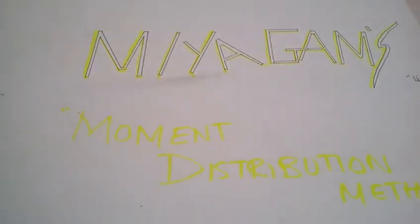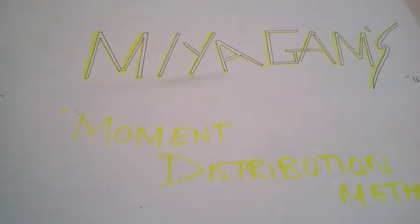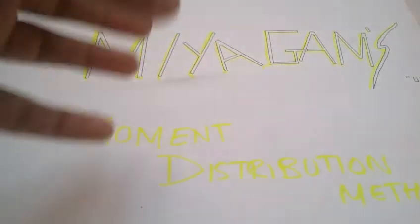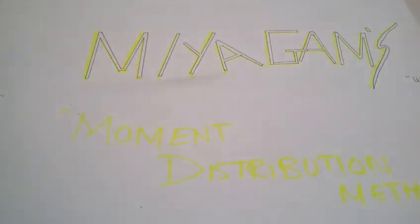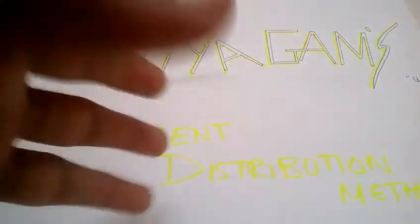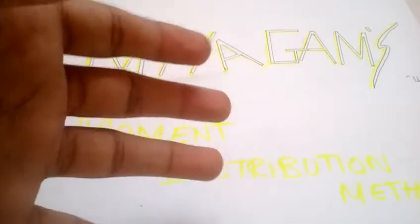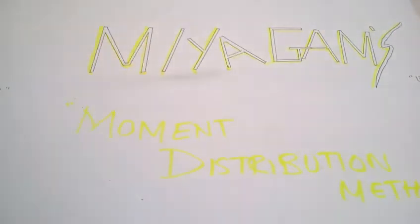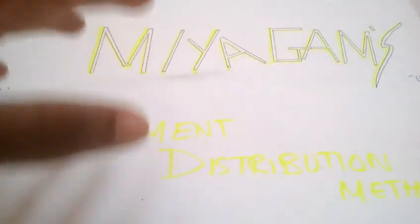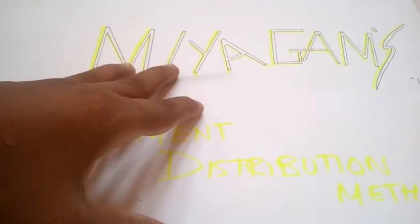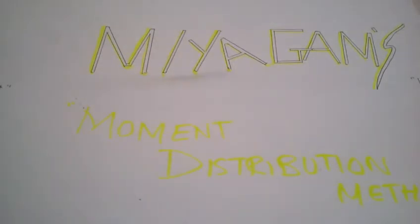In the Moment Distribution Method, every joint of the structure to be analyzed is fixed so as to develop the fixed end moments, then each fixed joint is sequentially released. Fixed end moments, which at the time of release are not in equilibrium, are distributed to adjacent members until equilibrium is achieved. The Moment Distribution Method can be demonstrated as the process of solving a set of simultaneous equations.